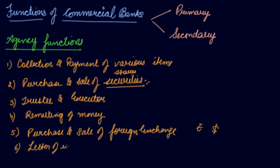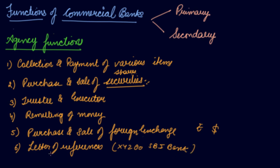The fifth agency function is letter of references. Banks give information about the economic position of their customers to domestic and foreign traders. For example, if you are company XYZ and a customer of SBI, and an investor or the government wants to know your financial position, the bank gives them a letter of reference.